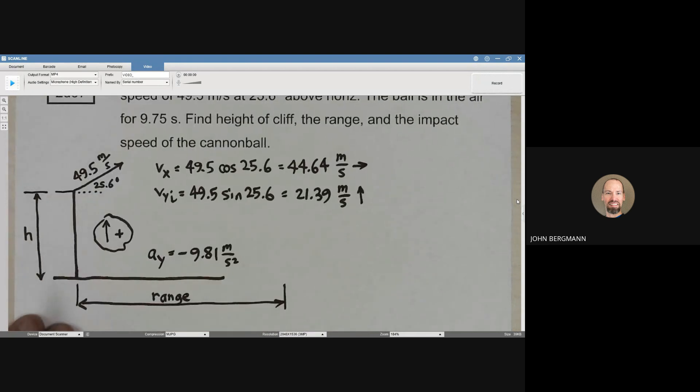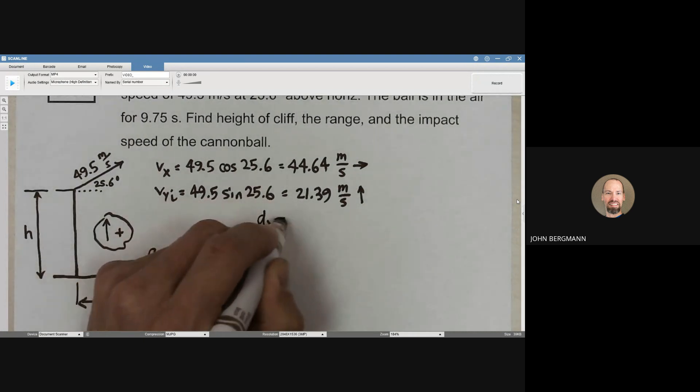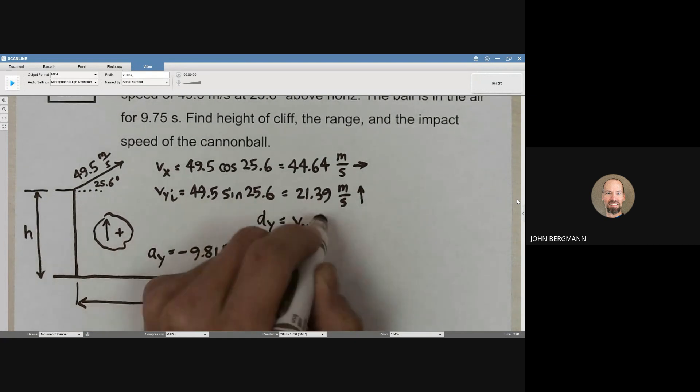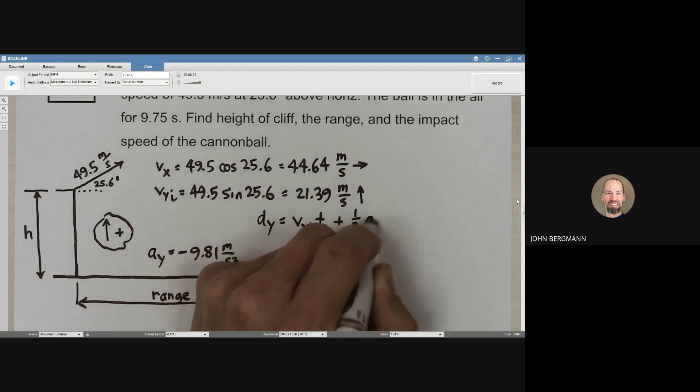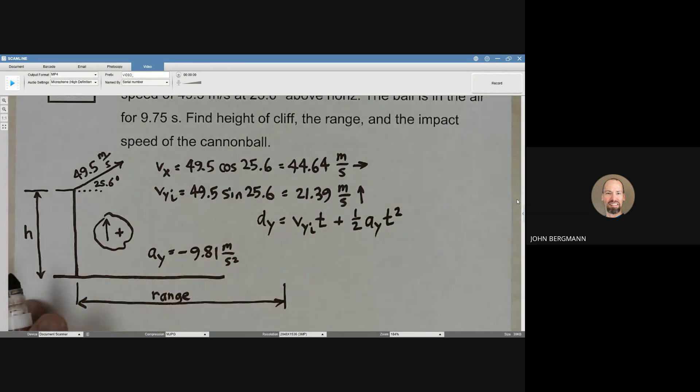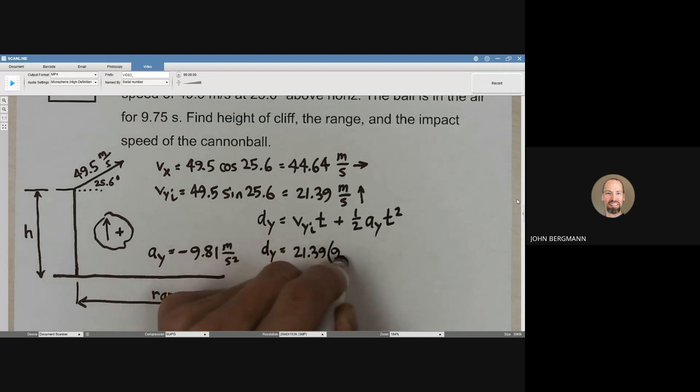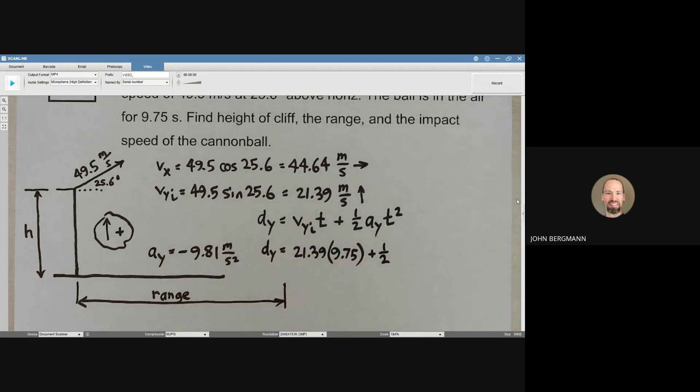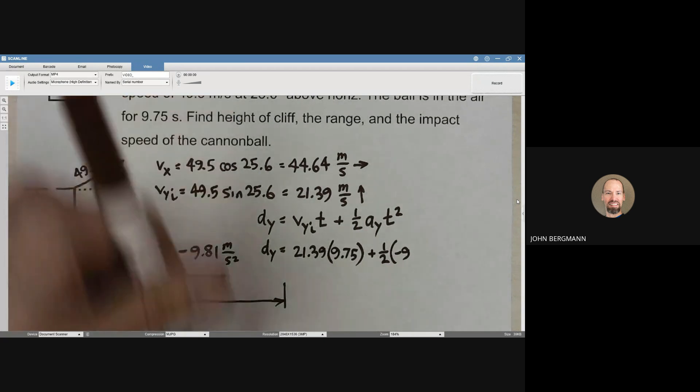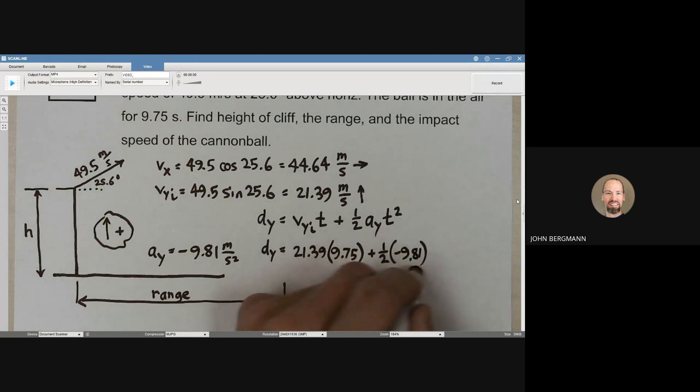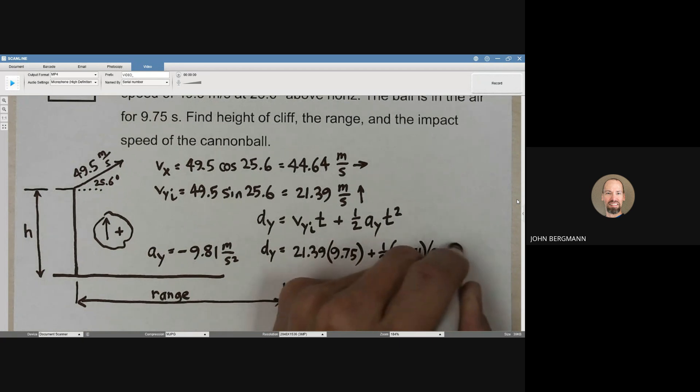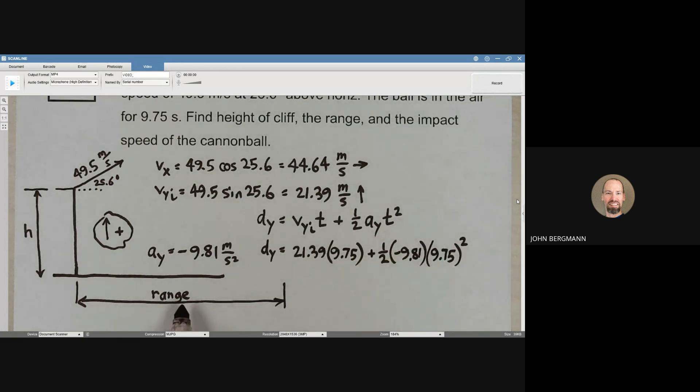Let's calculate dy and see if that gives us any information that is going to be useful. dy is vy initial times time plus one half ay times time squared, right from the equation sheet. Let's see what we get here. vy initial is 21.39. The time is 9.75 plus one half. Be careful, ay is negative. We've chosen upward to be positive. The acceleration vector points towards the earth. Therefore, it's negative 9.81. And then we have the time, 9.75 squared.